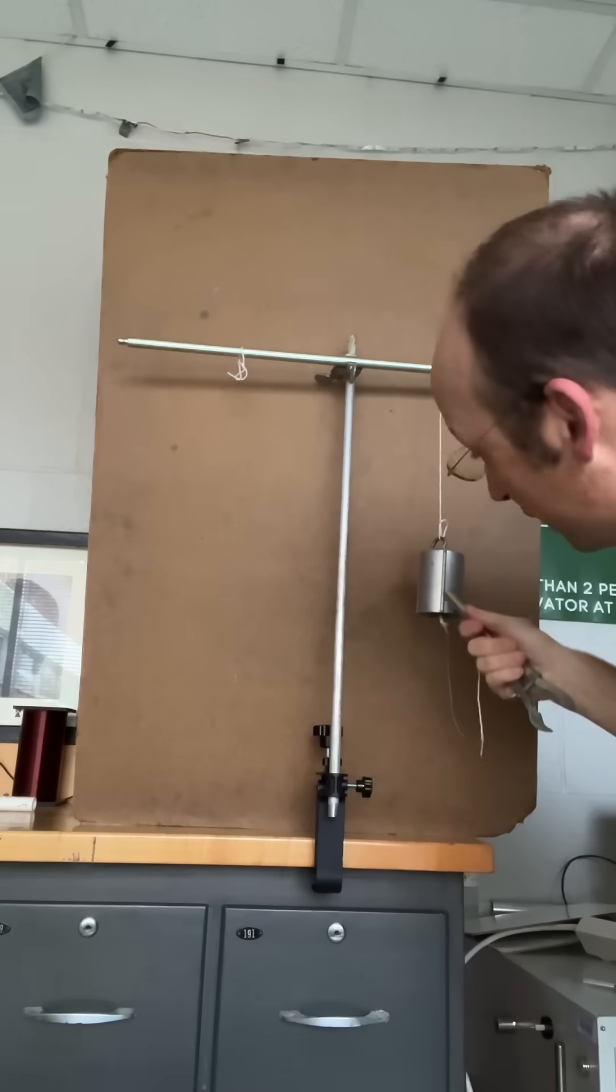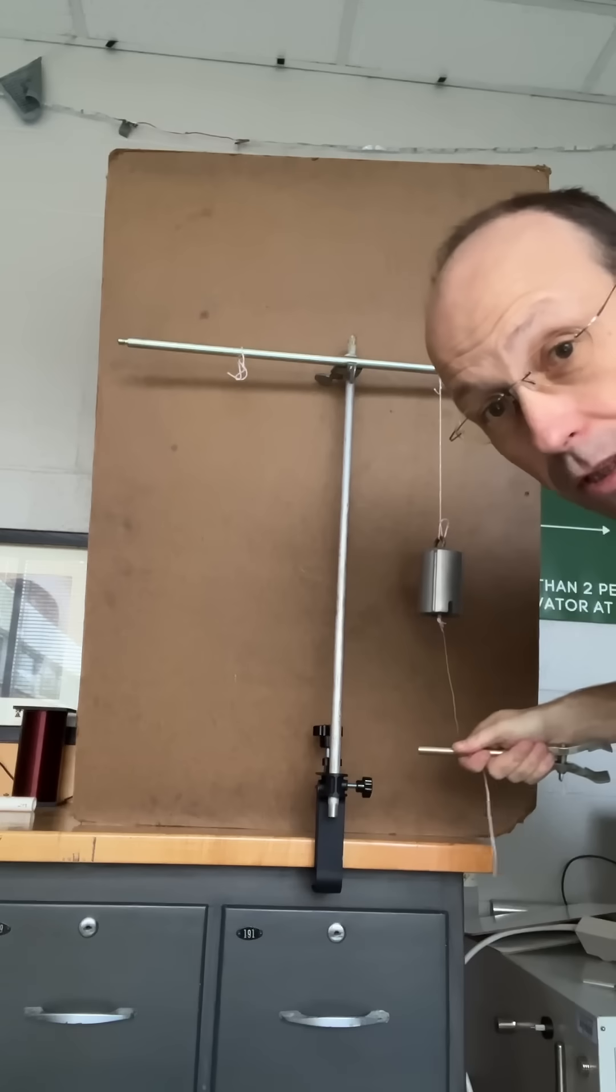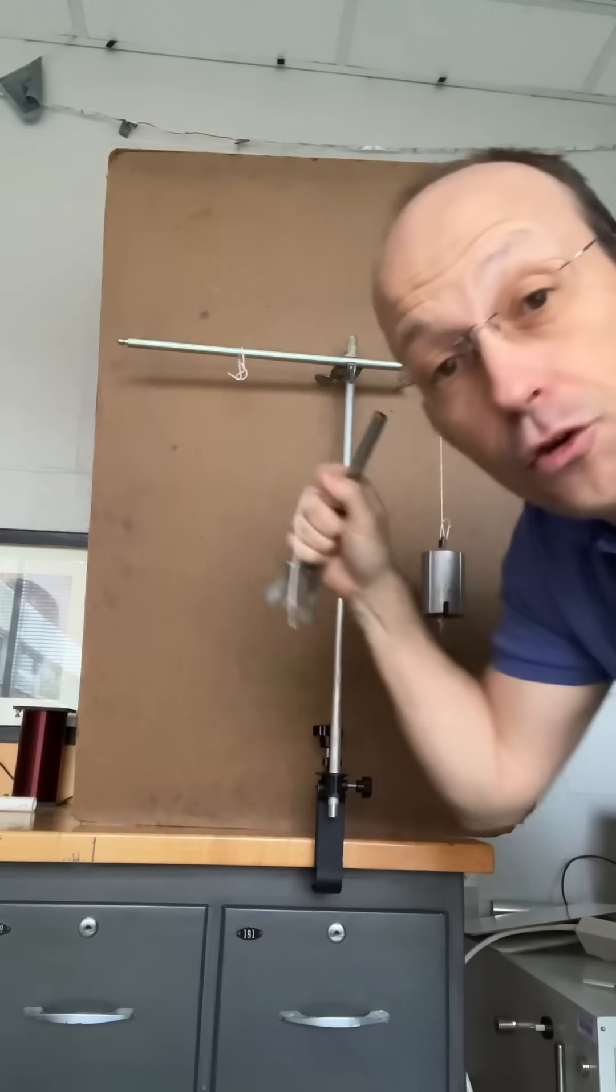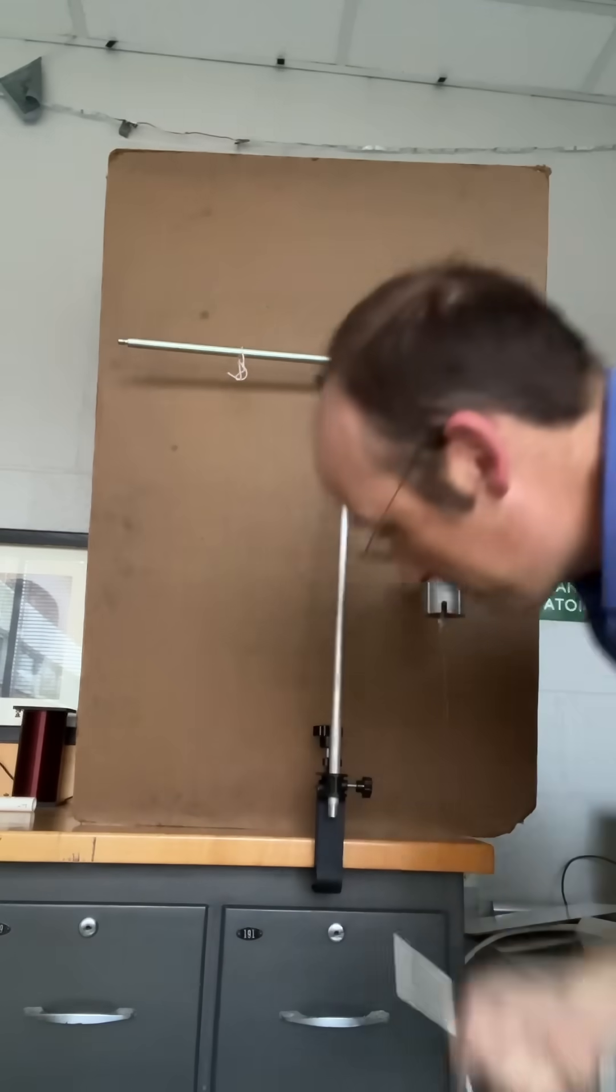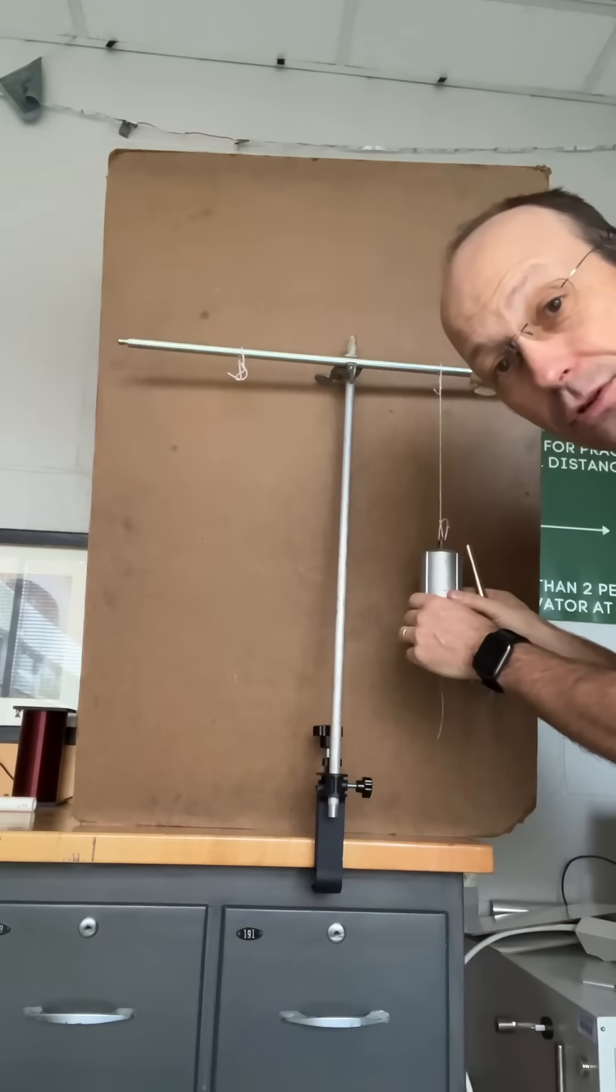So, if you pull slow, then the tension in the top is going to increase greater than the tension in the bottom because the weight of this is pulling on it, and the top string will break. If you pull fast, then the bottom string will break because this has mass and doesn't want to change its motion very much.